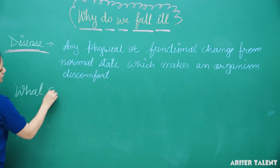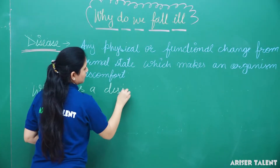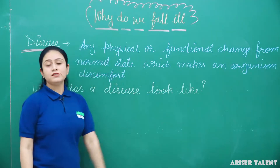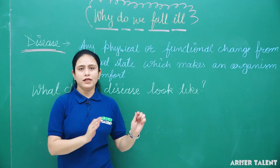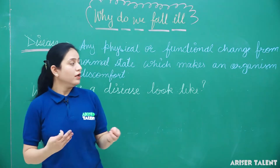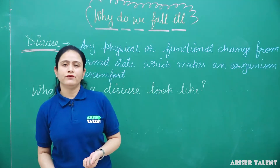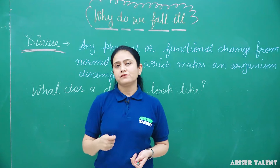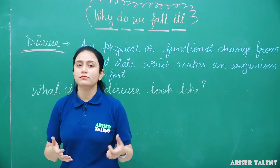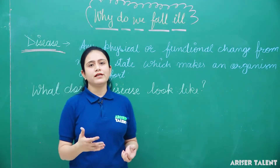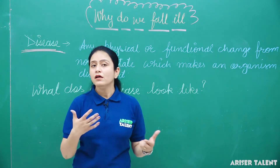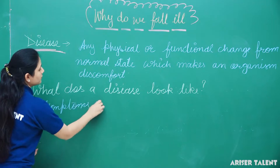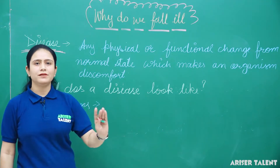What does a disease look like? When a person is functioning well and then you notice changes in organ functioning, you can identify they are suffering from a disease. There are some symptoms that help you identify this. Symptoms are problems like fever, common cold, diarrhea, vomiting, etc., that tell you a person is suffering from a disease.